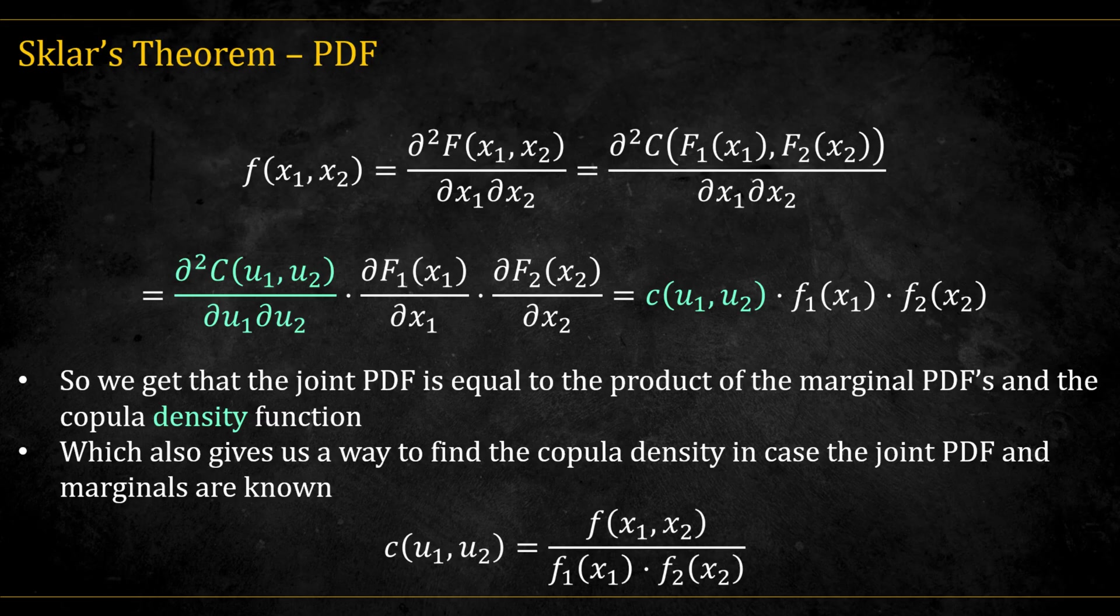The copula density is the double derivative of the copula. If we know any three of these quantities, the joint PDF, the two marginals, or the copula density, we can always find the fourth.